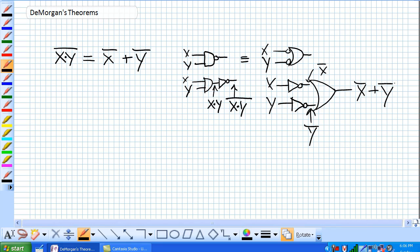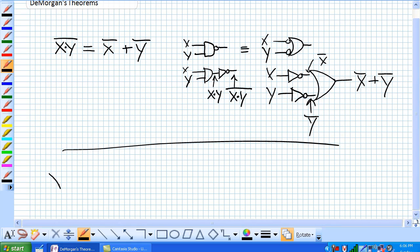Second DeMorgan's theorem, totally opposite. Basically, it says the complement of two or more variables ORed is equivalent to the AND of the complements of the individual variables, or the complement of sum of variables equal to the product of the complements of the variable. So, let's draw that guy out.